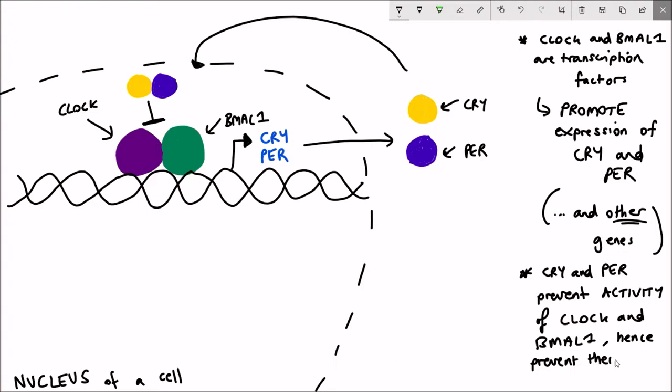By repressing the activity of CLOCK and BMAL1, they effectively repress the promotion of their own gene expression. CRY and PER are acting to prevent their own expression, and this therefore reduces the level of protein in the cytosol.